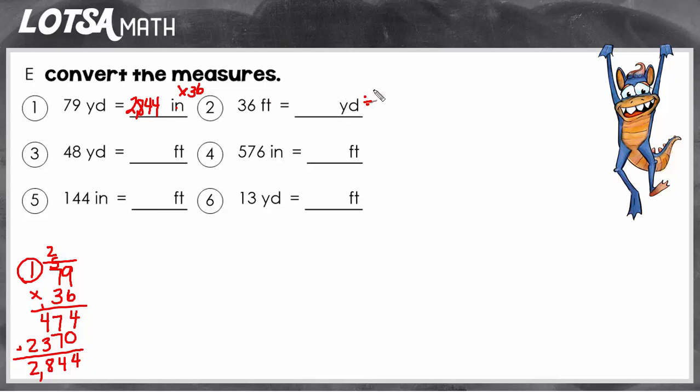And there are three feet in one yard, so we're going to divide by three. So we have to take our 36 and divide it by three, which is 12.